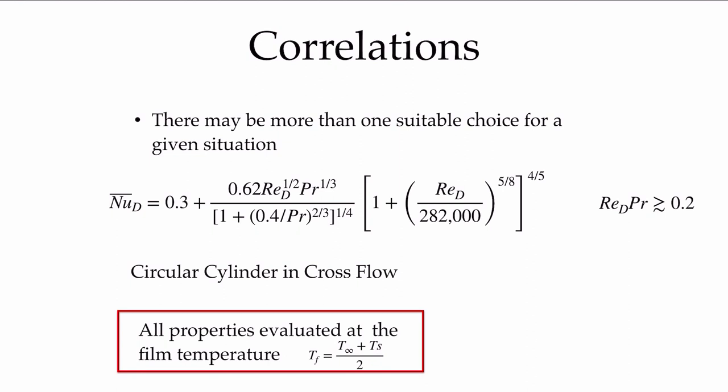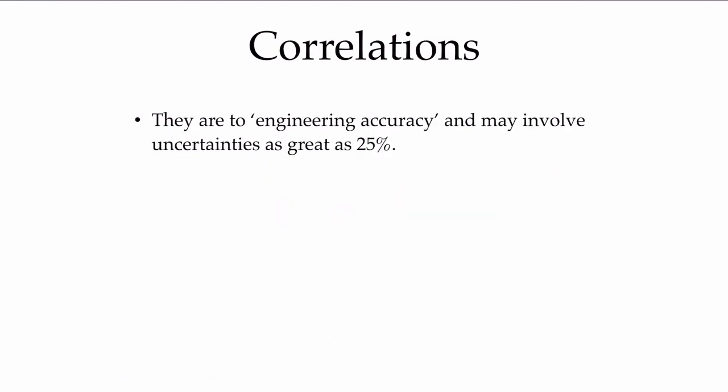So there are many different choices, you'll get slightly different answers. But let's bear in mind that all of these correlations are to engineering accuracy. They may be much greater accuracy than is stated here, but you can expect to see uncertainties as great as 25 percent. They're a wonderful way to start your calculation, they're a wonderful way to get a good estimate of the heat transfer, but expect that there is uncertainty in this.